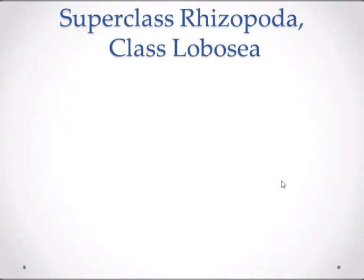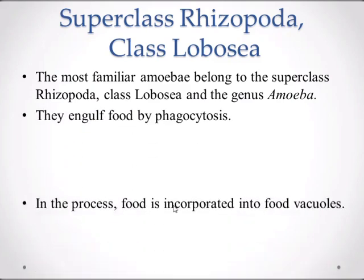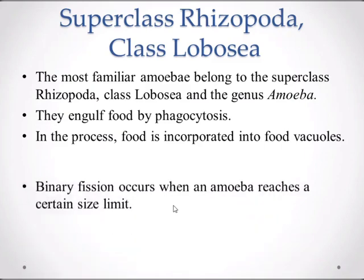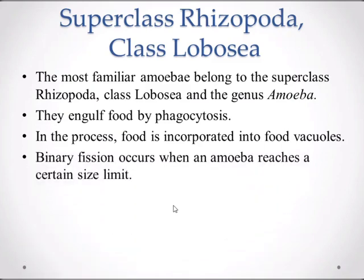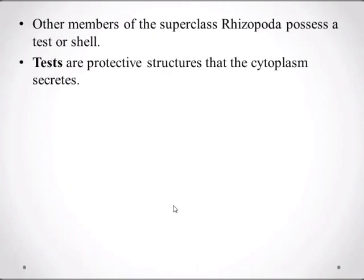The most familiar amoeba belong to the superclass Rhizophorea, class Lobosi, and the genus Amoeba. They engulf food by phagocytosis; in this process food is incorporated into food vacuoles. Blind diffusion occurs when an amoeba reaches a certain size limit. As with other amoeba, no sexual reproduction is known to occur.